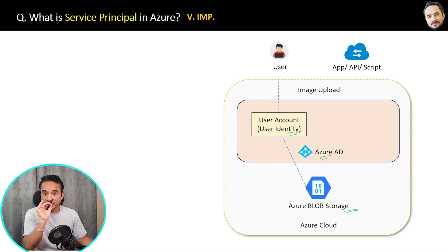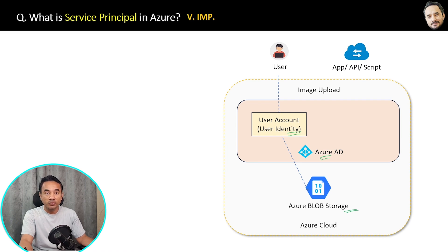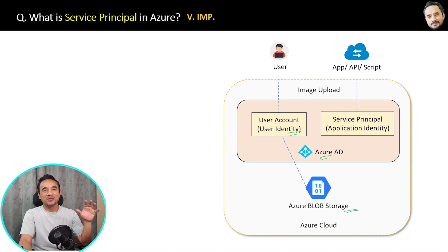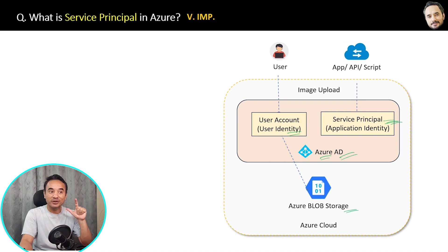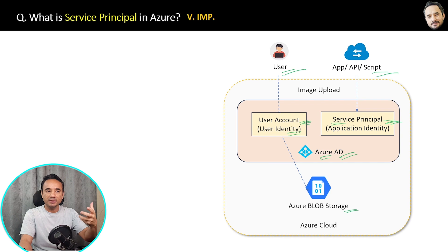Now let's say there is another application with no real user involved. This application needs to upload images on its own — maybe on a schedule or based on some background logic — without a real user being involved. This is where the service principal comes in. Instead of using a real user identity, you create a service principal, which is a special application identity inside Azure Active Directory — just like you created a user account in Azure AD for a user. So a service principal is just like a user account, but it's for an app.